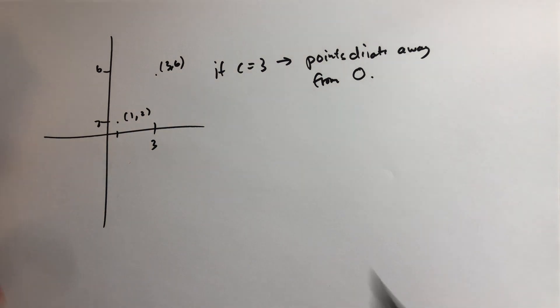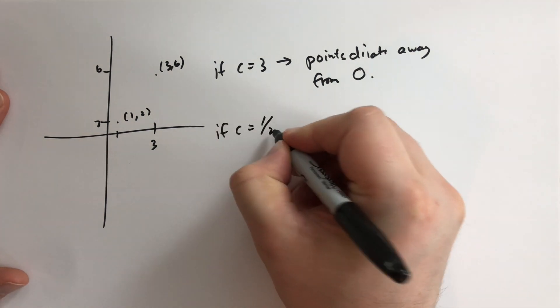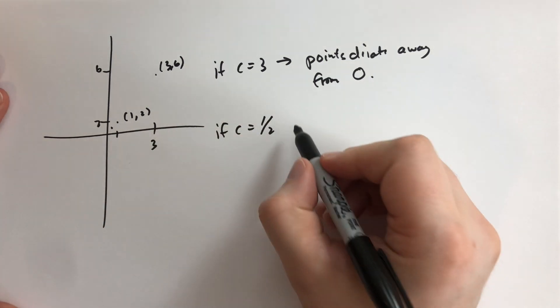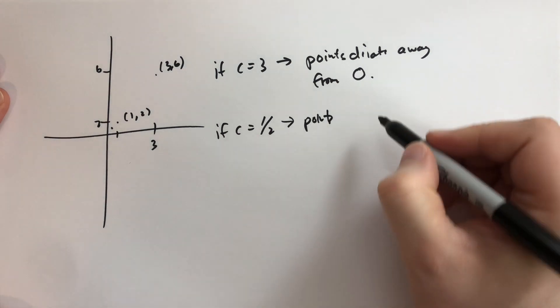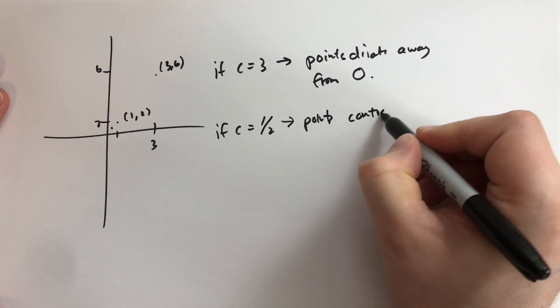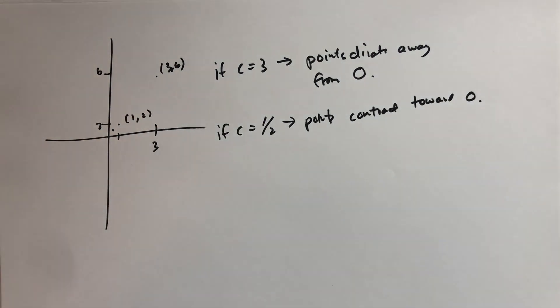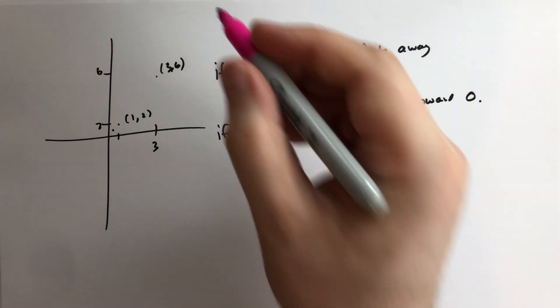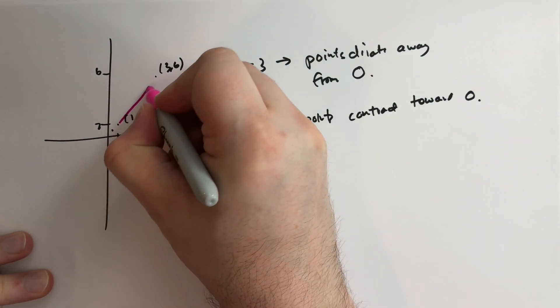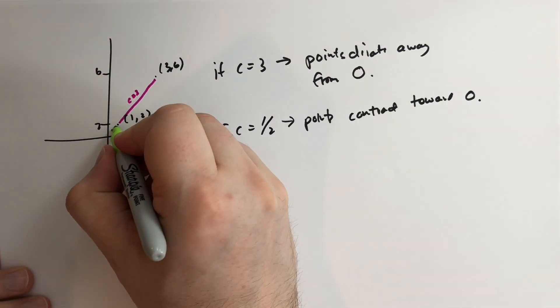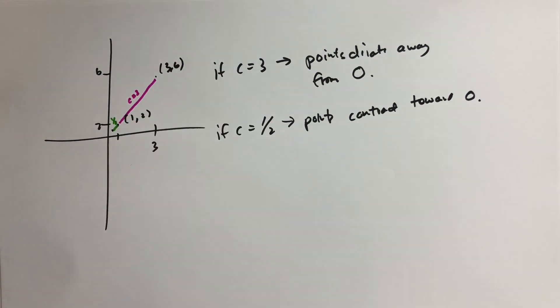If C is one half, what do you expect to happen? Well it's going to go to one half comma 1 which is right there. Then the points they contract towards O. So we started here. Let me draw this out. Let's use hot pink for what happens when C is 3. This is C equals 3. And let's use a different color. Let's use this lime green for when C is one half. That's kind of what happens.